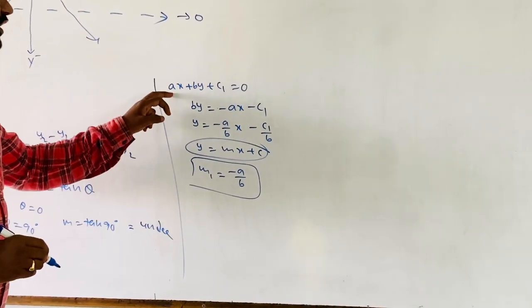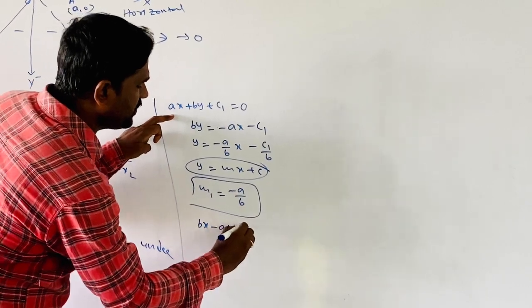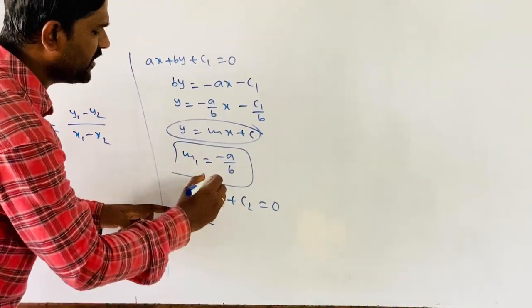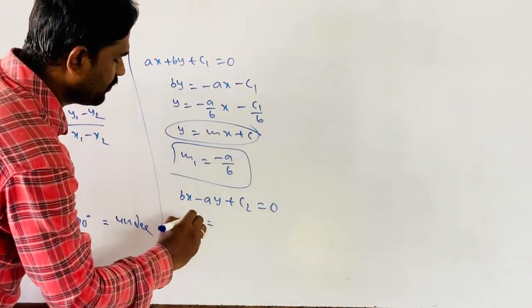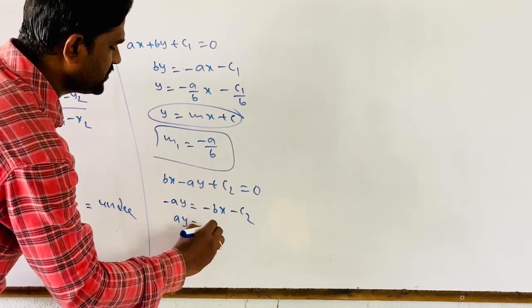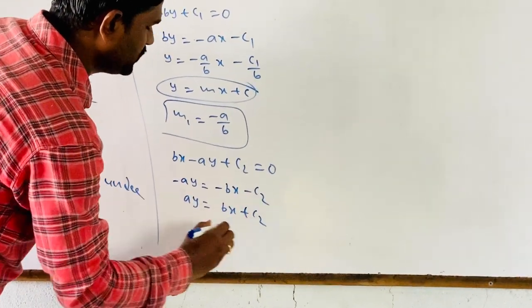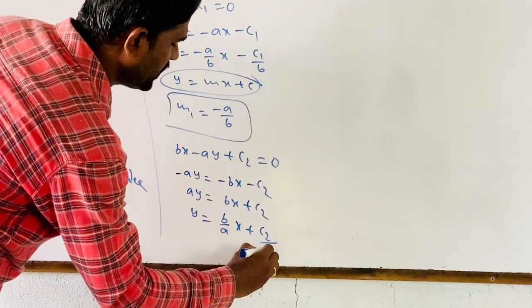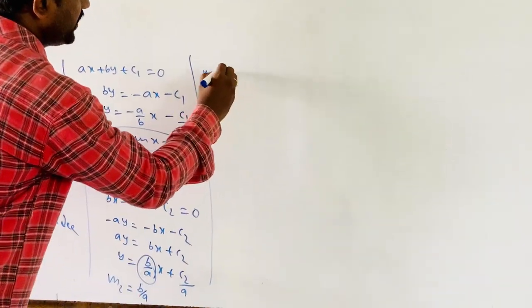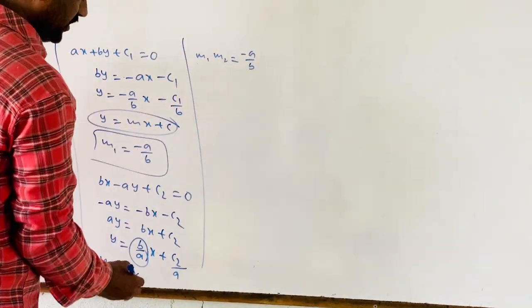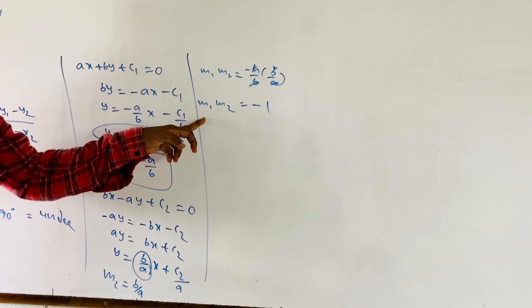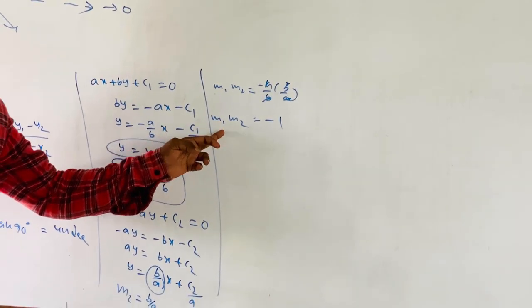Similarly, a line perpendicular to the given line is bx − ay + c₂ = 0. Rearranging: −ay = −bx − c₂, so ay = bx + c₂, giving y = (b/a)x + c₂/a. The slope here is m₂ = b/a. The product of the slopes is m₁ × m₂ = (−a/b) × (b/a) = −1. This confirms that the product of the slopes of two perpendicular lines equals −1.